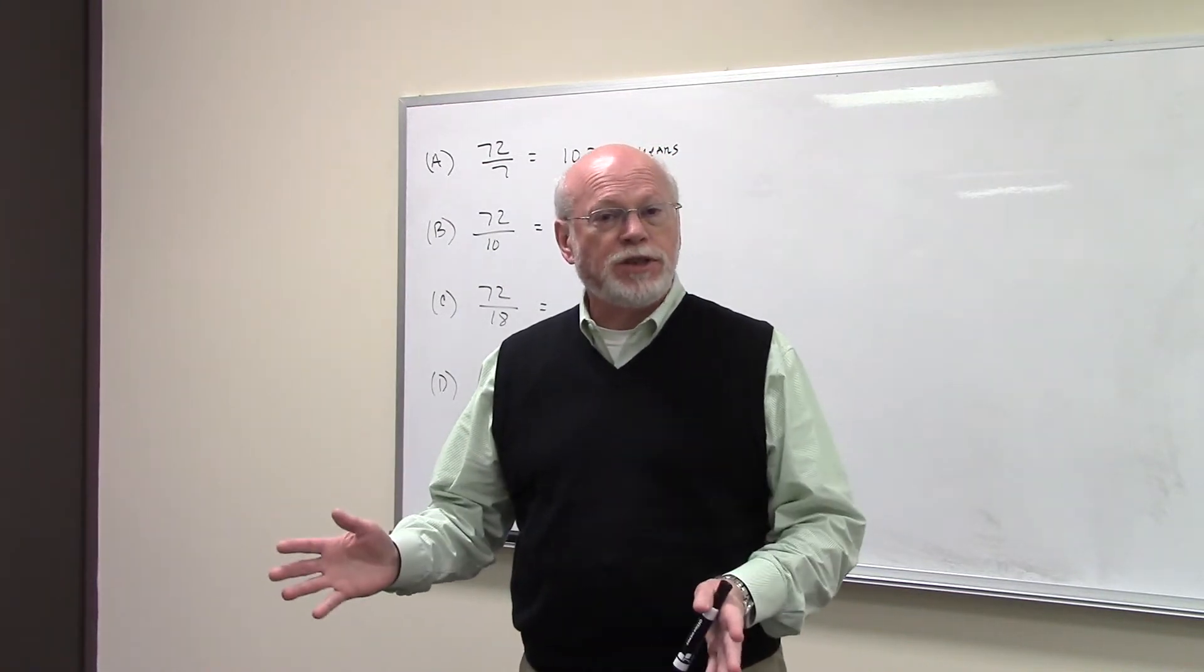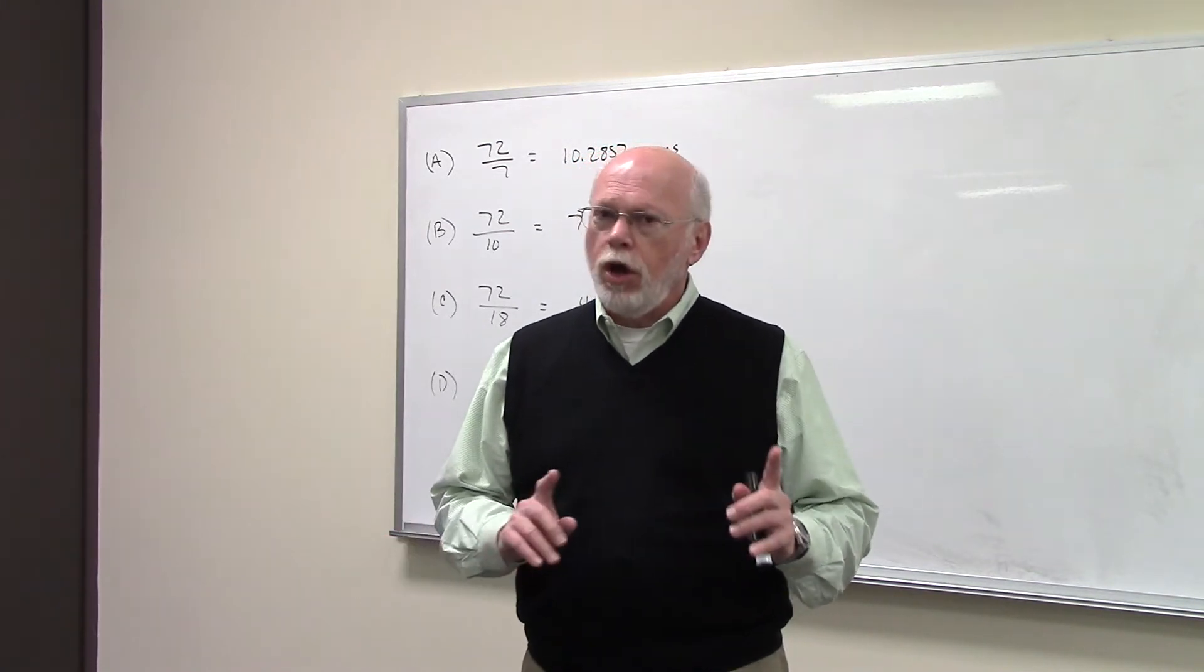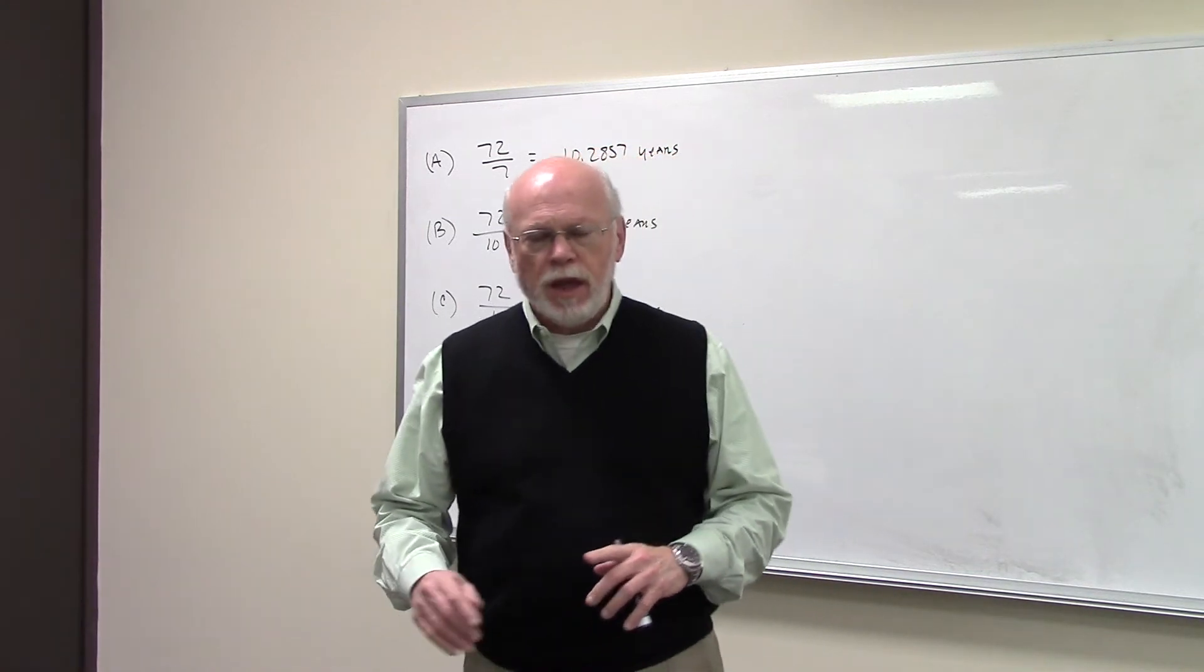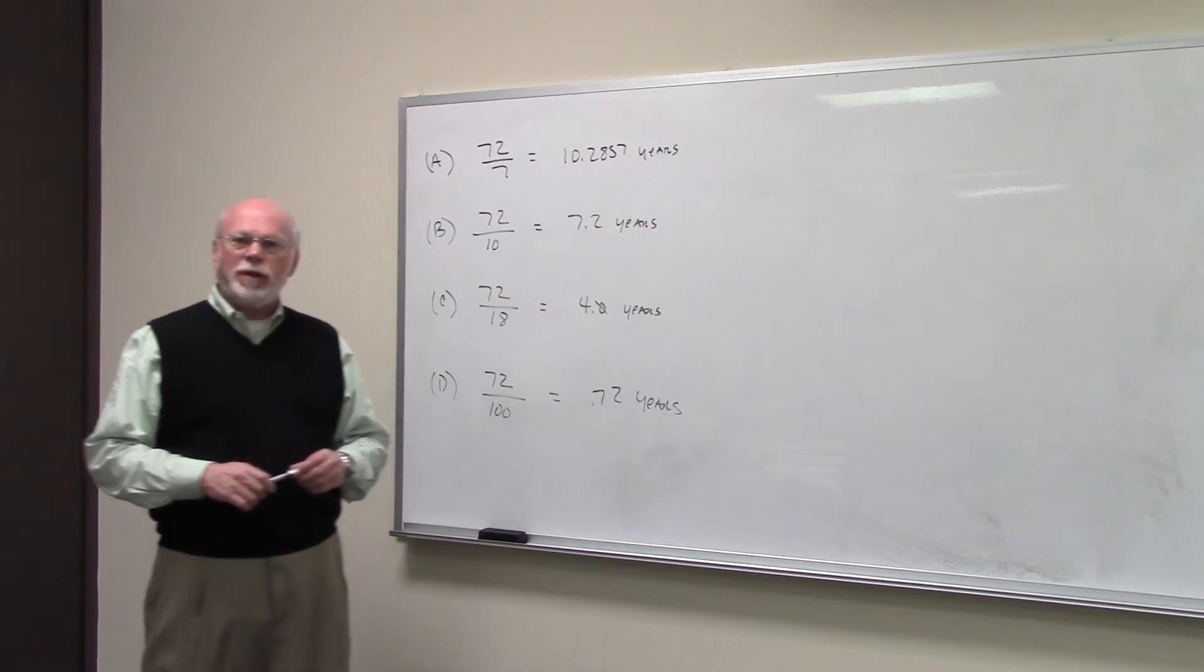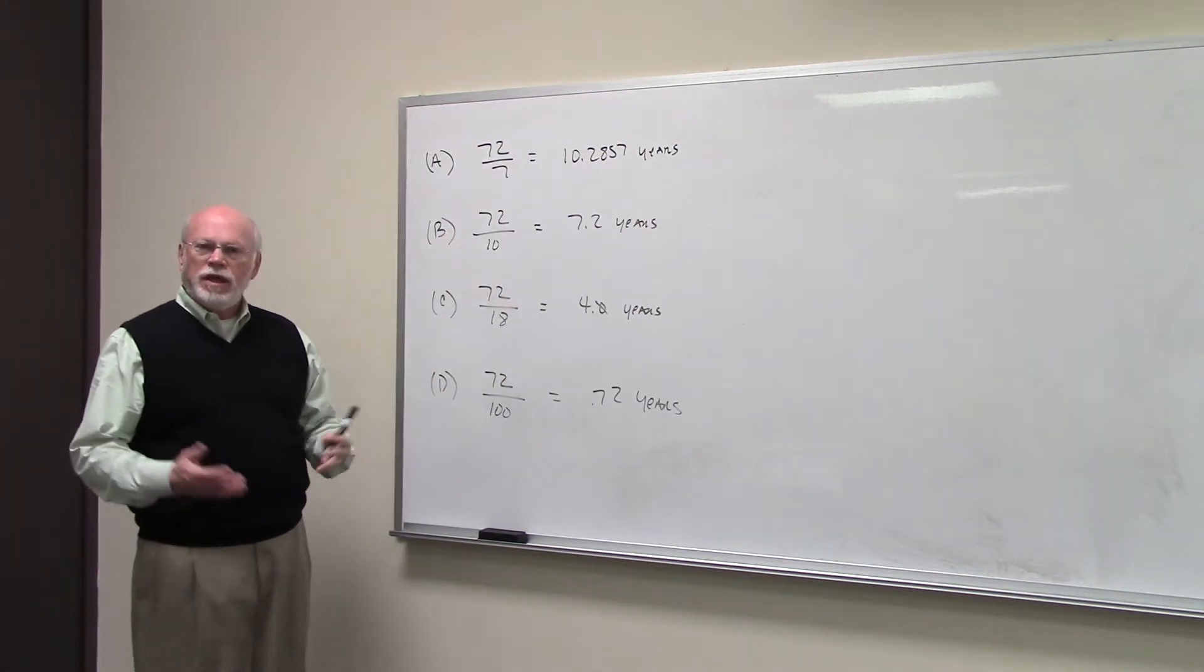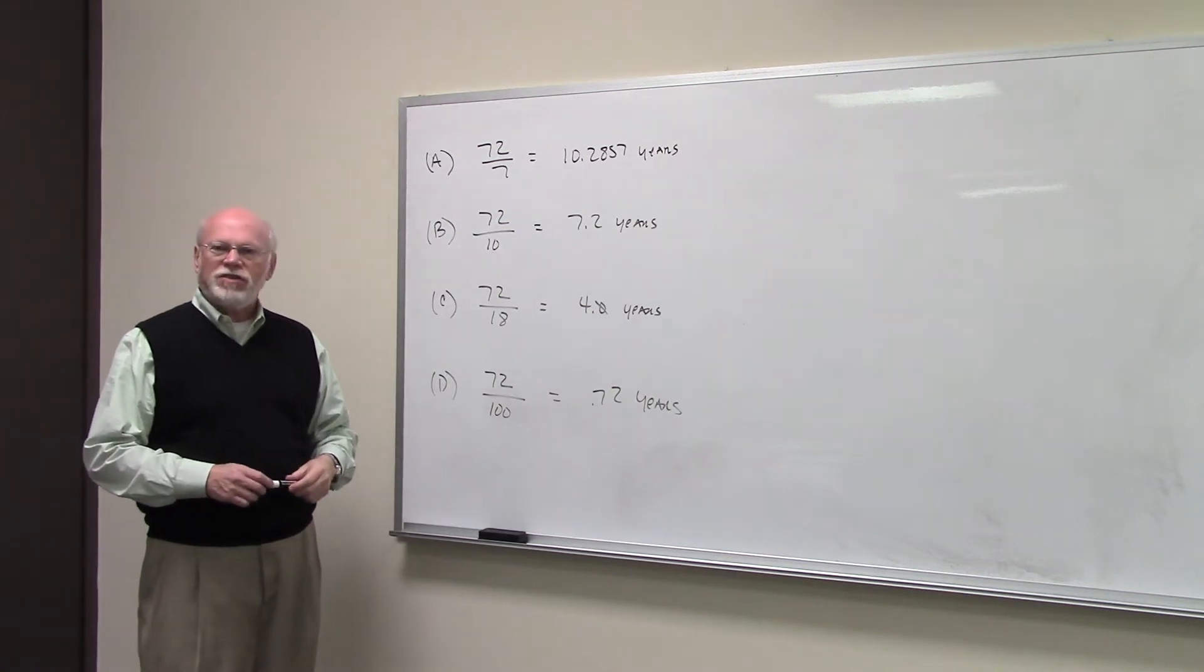So remember, the Rule of 72 is only good for doubling, only good for lump sums. The A part of this problem asks, how long would it take a lump sum to double if you earn 7% interest? 72 divided by 7, 10.2857 years.